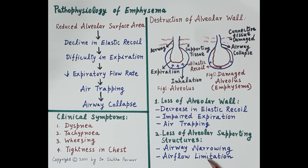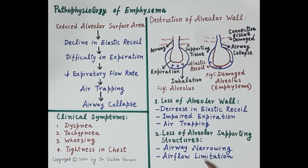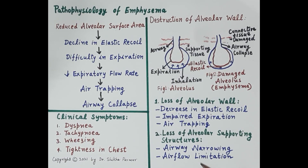An important point: emphysema and chronic bronchitis are two diseases which usually coexist and are clinically grouped together as chronic obstructive pulmonary disease (COPD). Emphysema is a largely irreversible disease. If you find the video useful, kindly like, subscribe, and share. You can write your questions in the comment section.